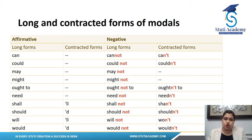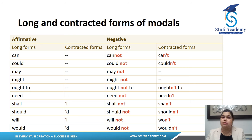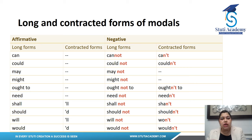'Ought to' has no contracted affirmative; the negative is 'ought not to', and the contracted form is 'oughtn't to' — rarely used but valid. 'Need' has no contracted affirmative; the negative 'need not' contracts to 'needn't'. 'Shall' has the contracted affirmative form with an apostrophe — 'we'll' — and the negative is 'shall not', contracted to 'shan't'.